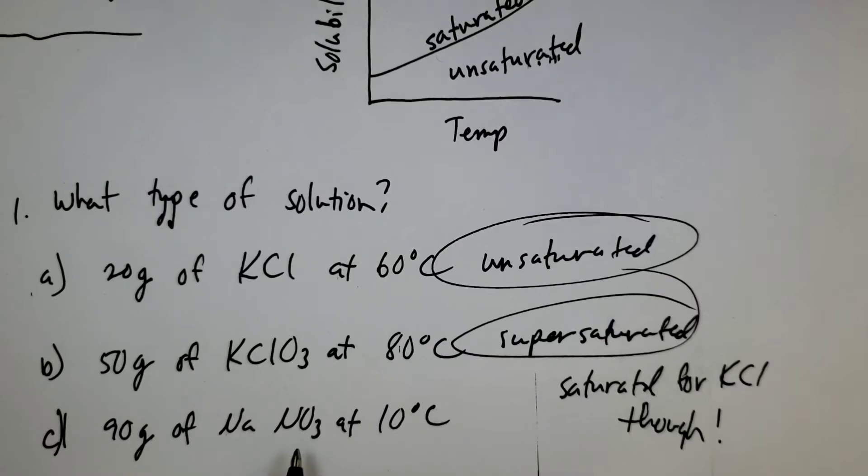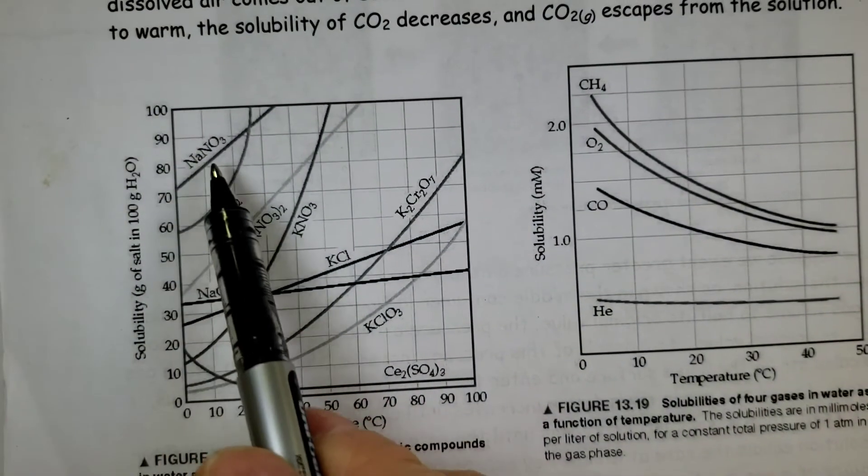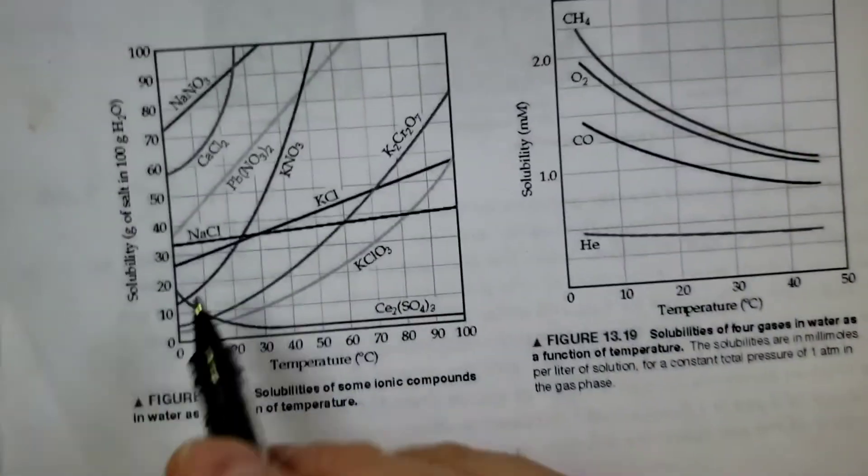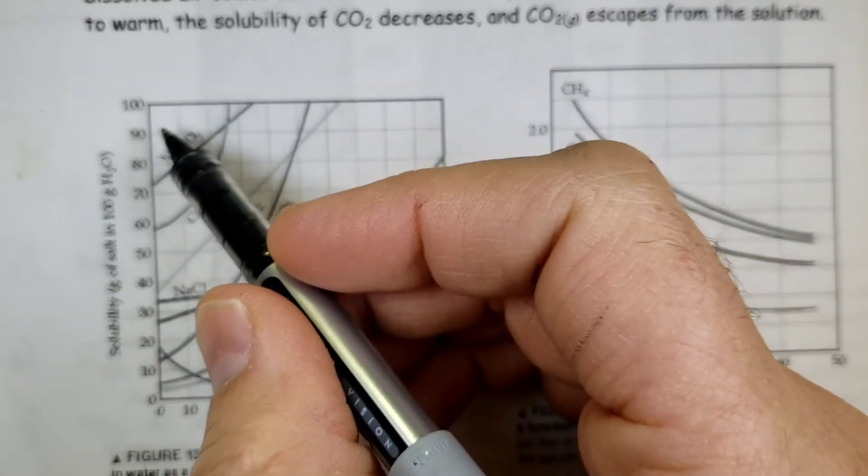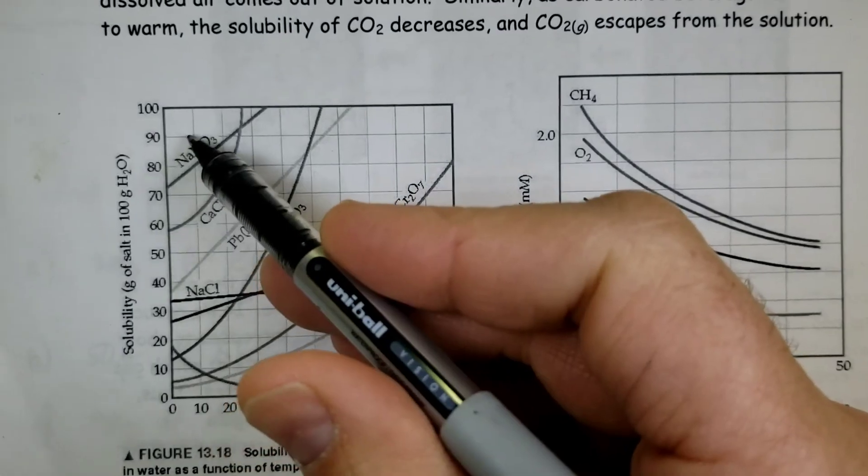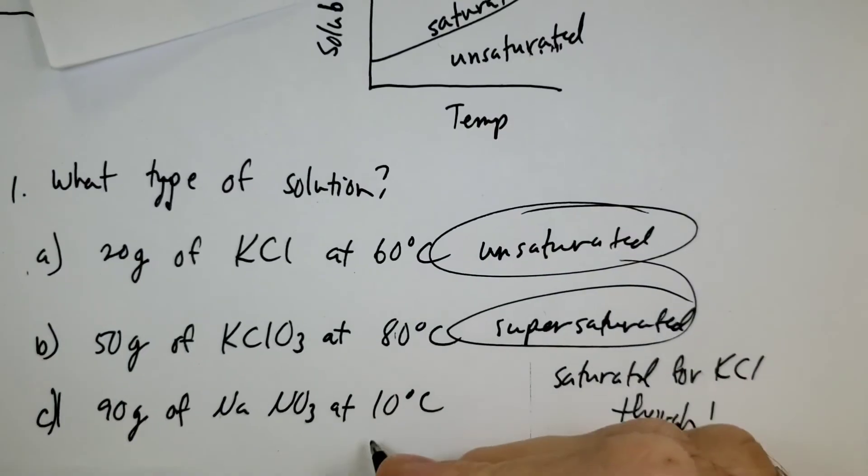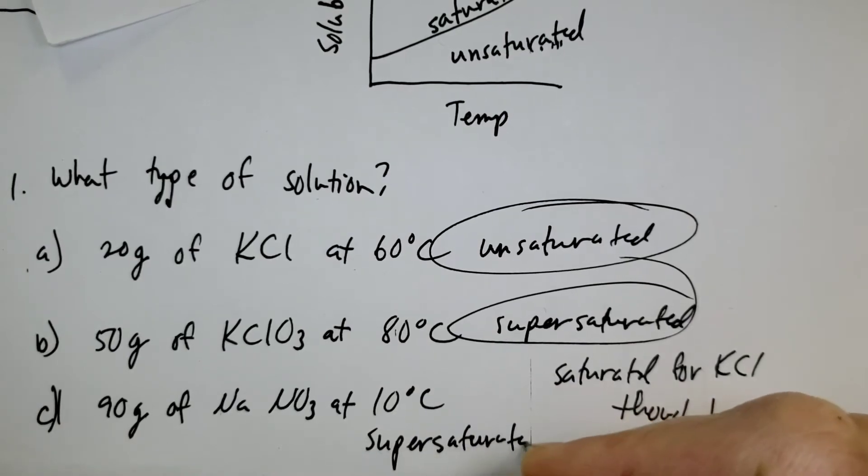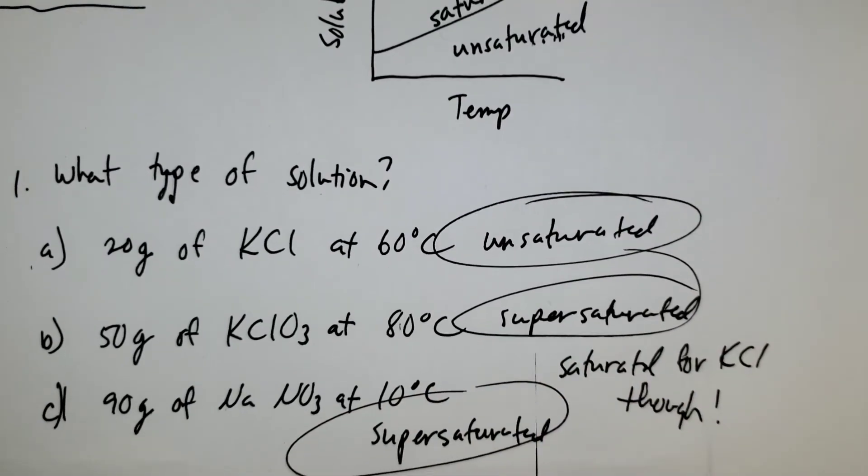And then the last one here, 90 grams of sodium nitrate. So let's find sodium nitrate. There it is right there. If I have 90 grams dissolved at 10 degrees, 90 grams, 10 degrees, oh yes, I'm above the line. So it is supersaturated.